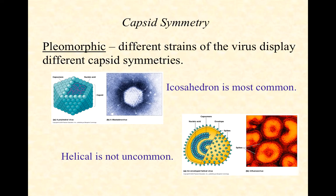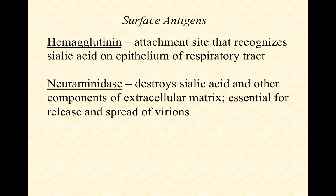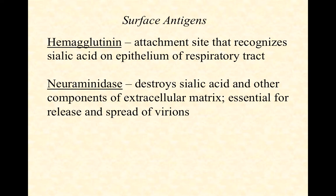The spikes on the surface of the envelope — remember, this is an enveloped virus — are proteins or glycoproteins, typically referred to as surface antigens. The term antigen means something that generates an antibody response, a molecule our immune systems can recognize. Our immune system can see the hemagglutinin and neuraminidase spikes on that surface. They're both tricky words to spell and pronounce, so practice a few times. The neuraminidase has an -ase ending, telling you it's an enzyme; hemagglutinin has an -in ending, telling you it's a non-enzyme protein.